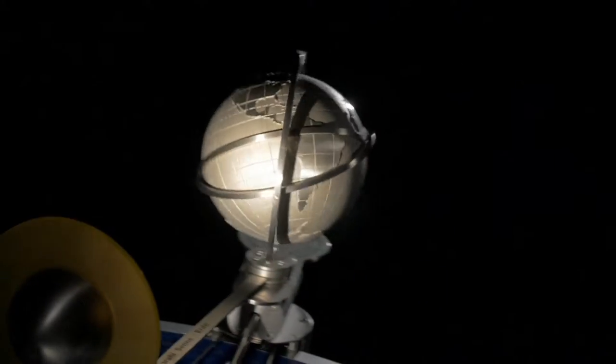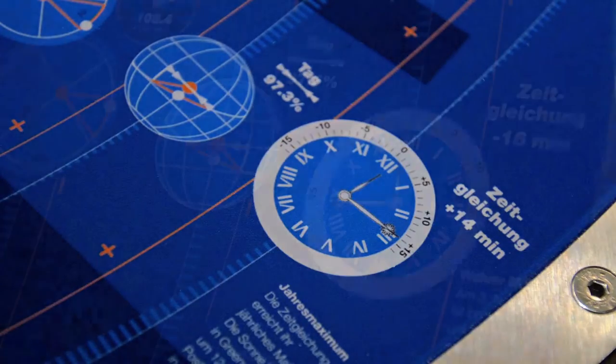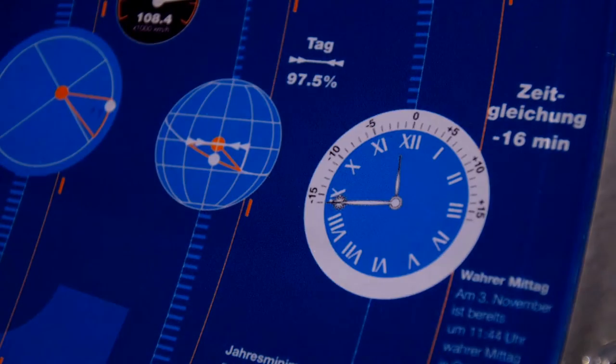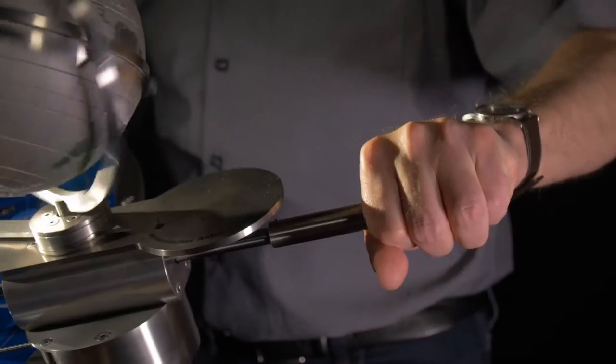The Earth's elliptic orbit around the Sun and its tilted axis mean that over the course of the year, the sundial is sometimes fast and sometimes slow. So is it even possible to display Central European time directly on a sundial with down-to-the-minute precision?